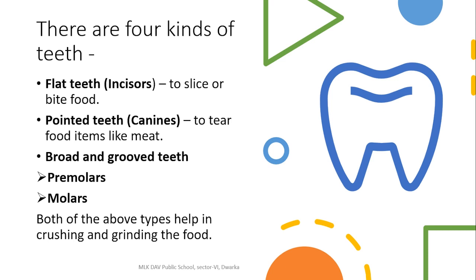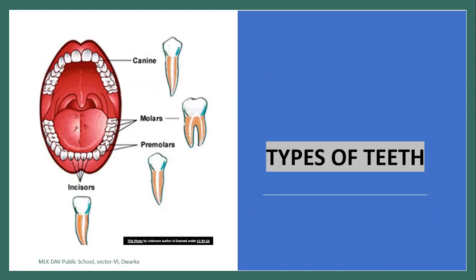Remember, when you take a biscuit, you bite it with your front teeth. When you have to eat a piece of chicken, you tear it with your canines. But when you are eating hard food items like nuts, you crush them with your back teeth — that is the premolars and molars. Here you can see the different shapes of the teeth: the canines have a pointy edge, the premolars and molars are broad, and the incisors in the front are flat.